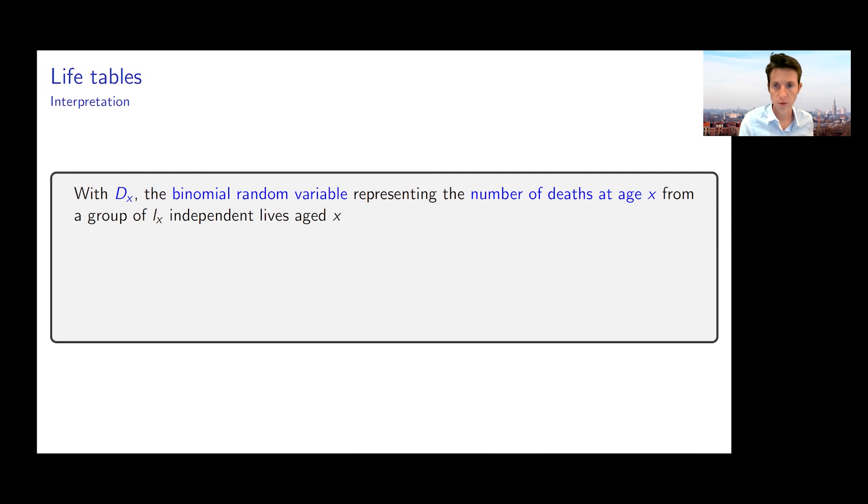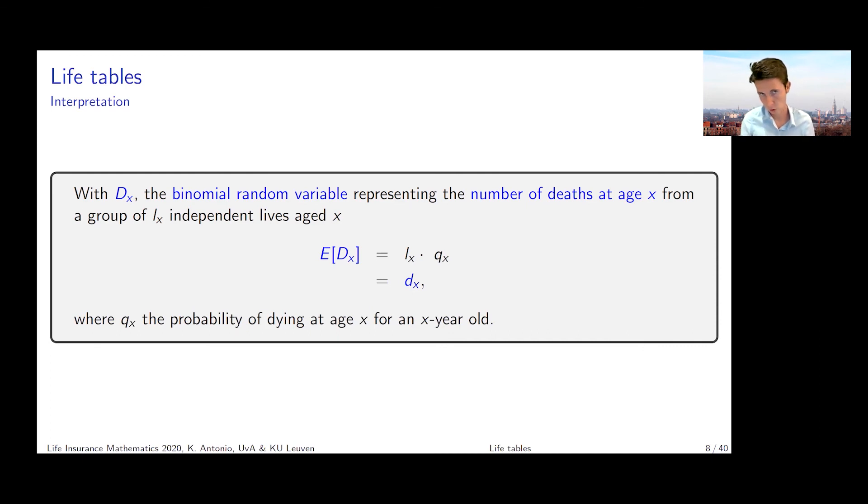If we introduce Dx, the binomial random variable representing the number of deaths at age x from a group of lx independent lives who are age x old, we can say the expected value of Dx is the number of experiments, lx, multiplied with the probability of success, qx. This expected value is what the small dx in my table expresses.